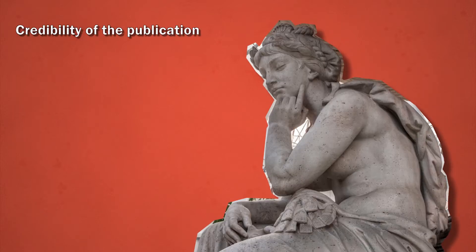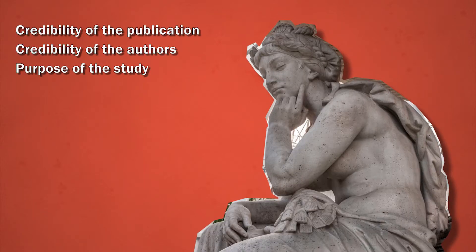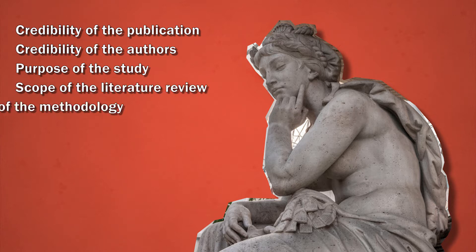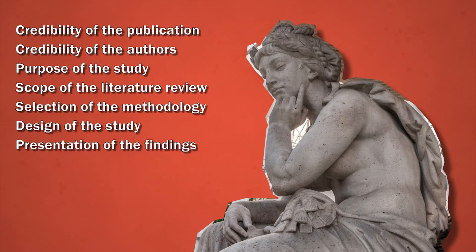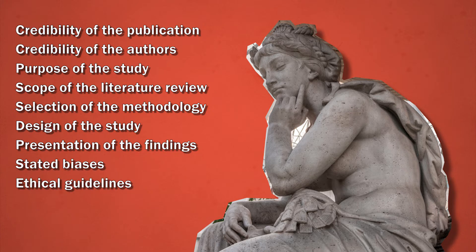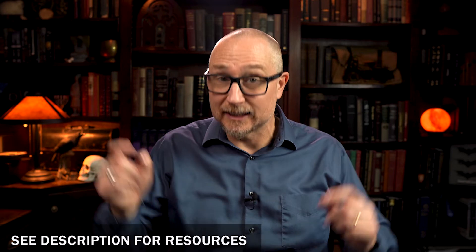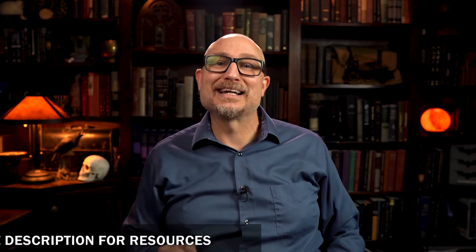When pulling together a literature review, there are a variety of factors you can look at to establish the credibility of a research article: the credibility of the publication, the credibility of the authors, the purpose of the study, the scope of the literature review, the selection of the methodology, the design of the study, the presentation of the findings, the stated biases, and the consideration of ethical guidelines. There's a lot to consider, so I've included a checklist in the description below.